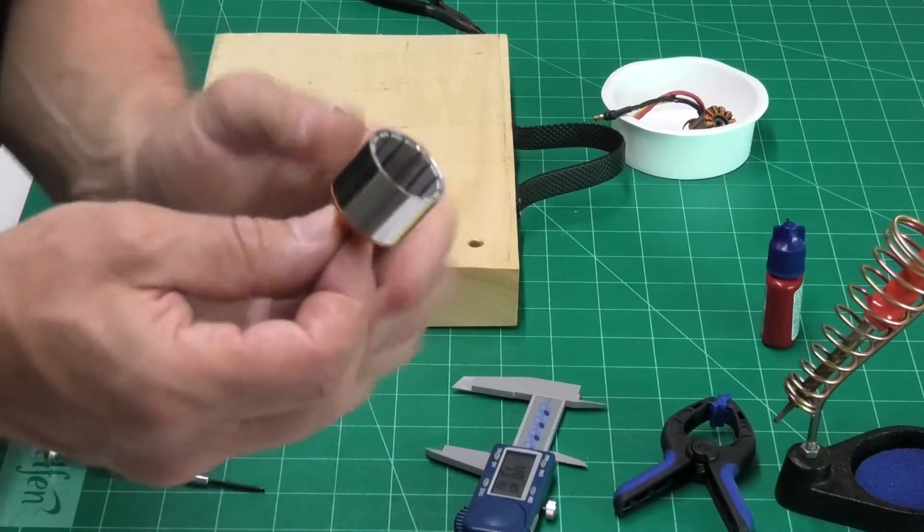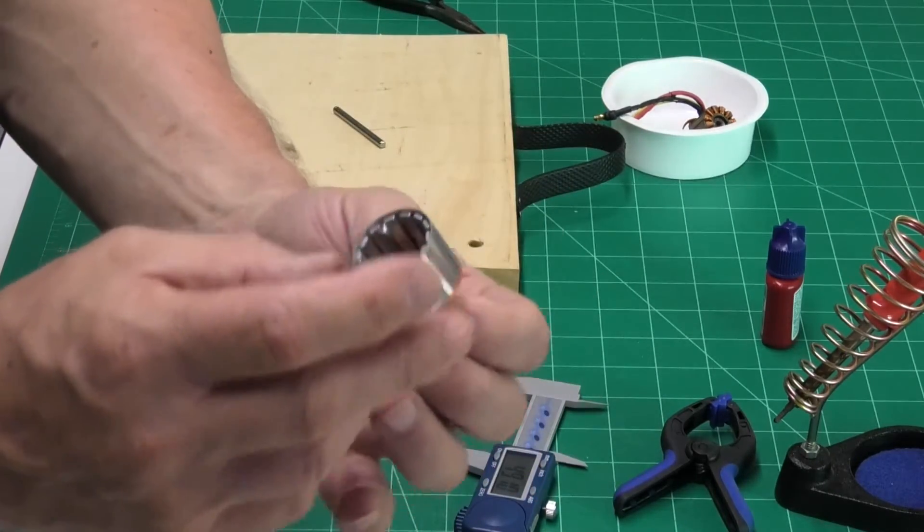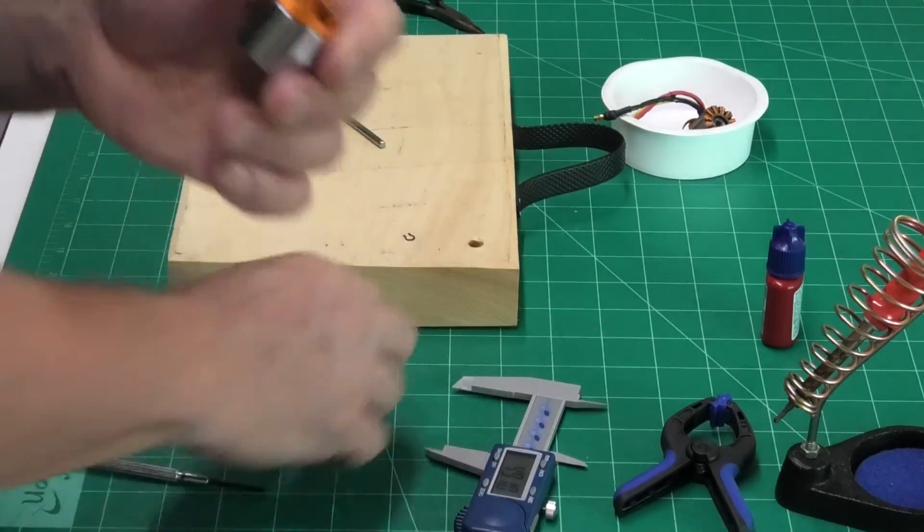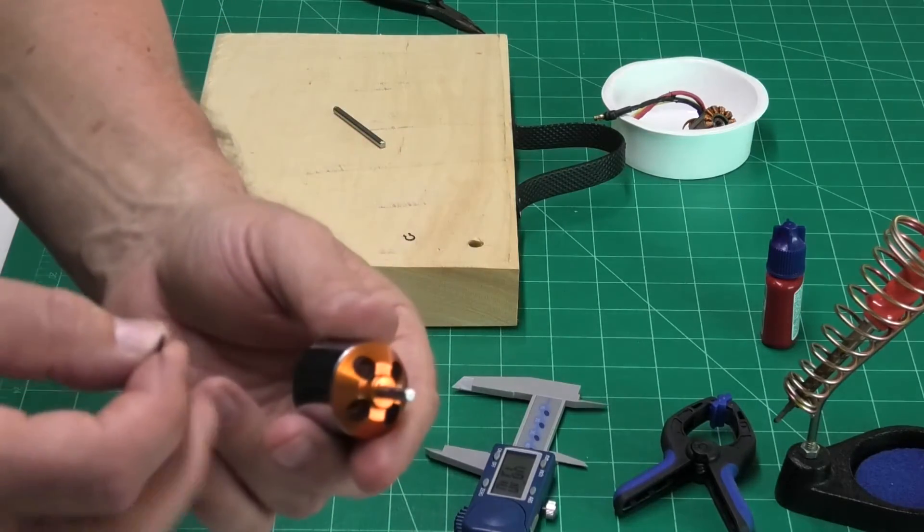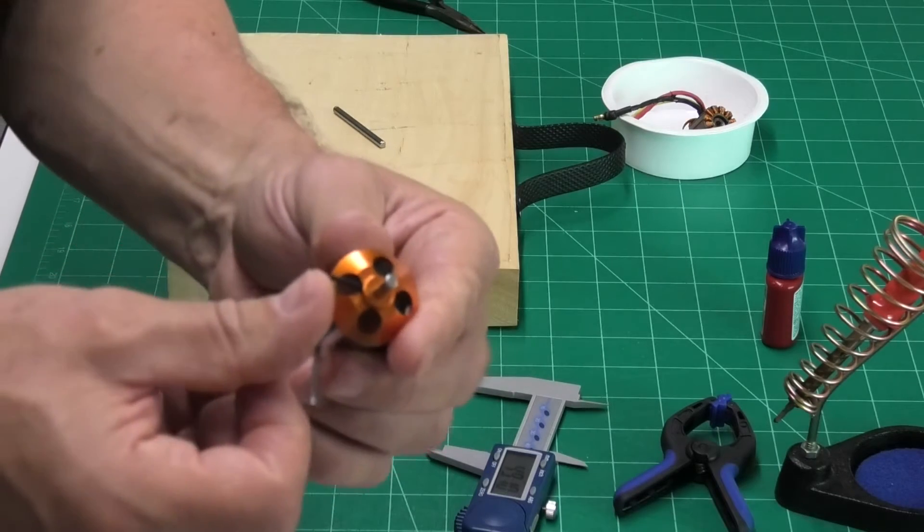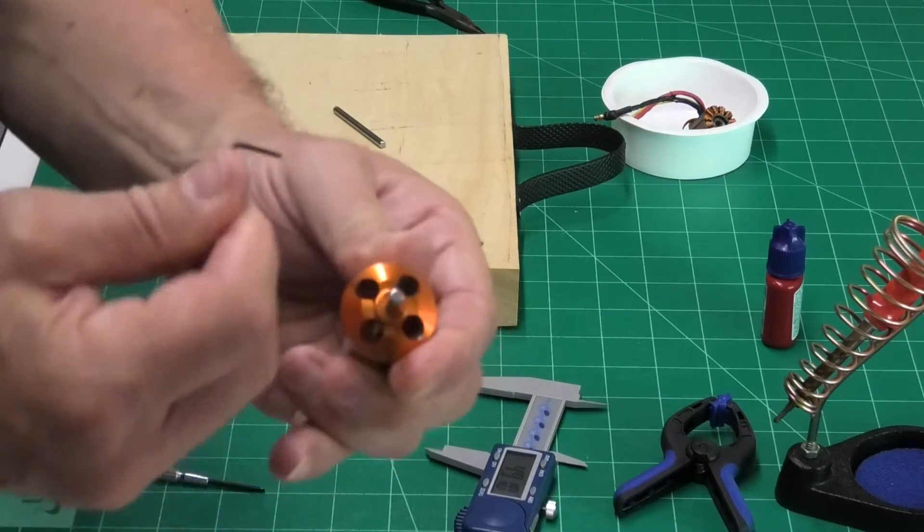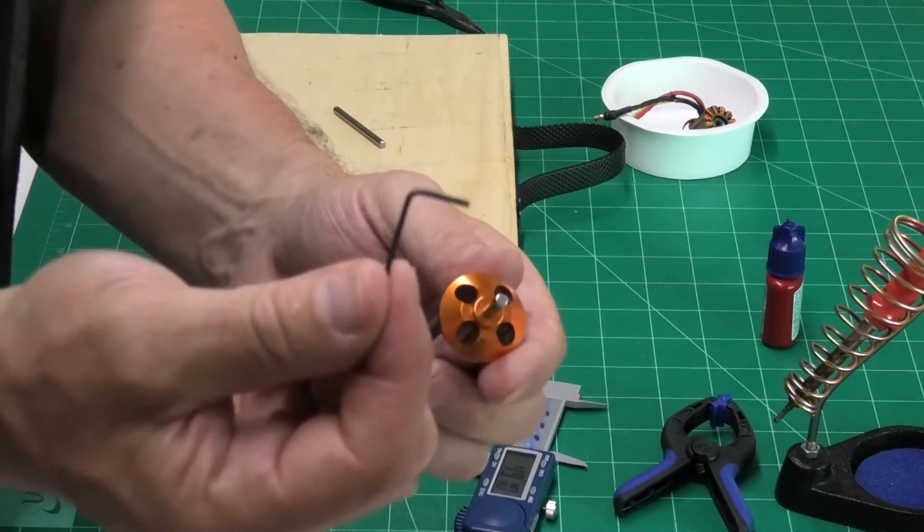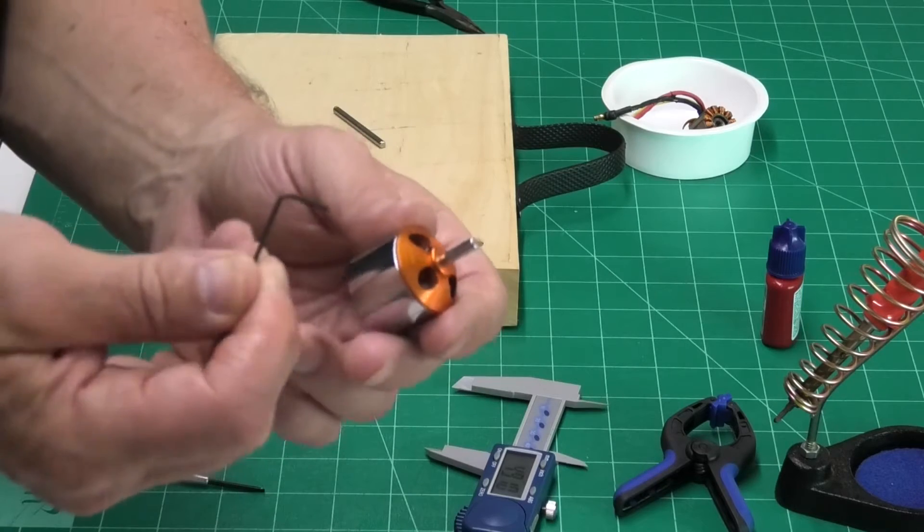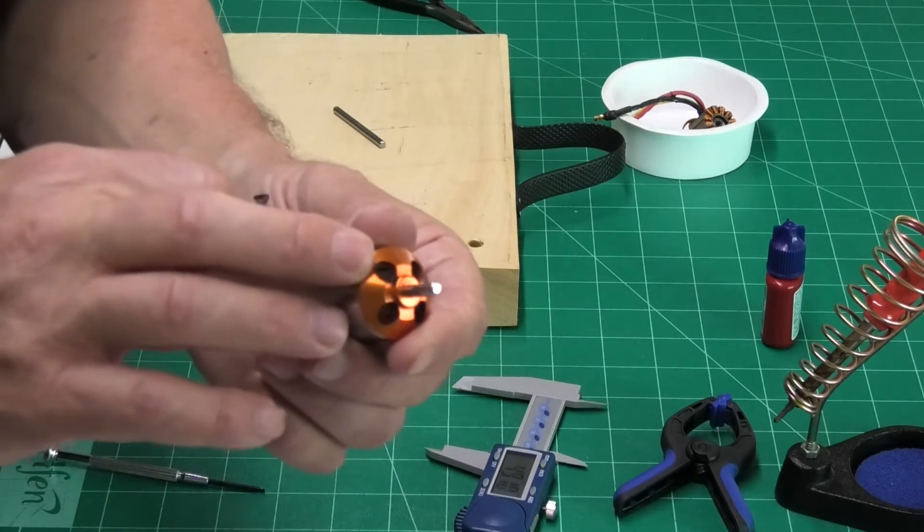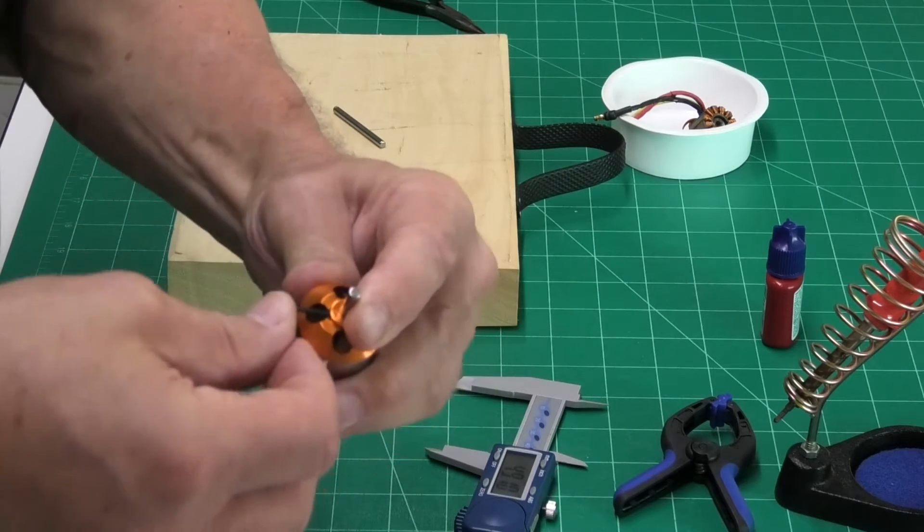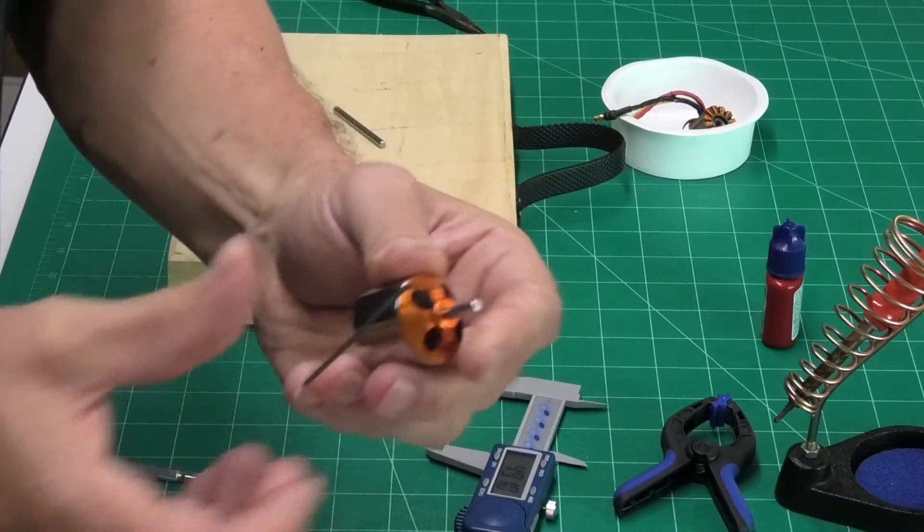So now what we need to do, we've got the outer casing with all the magnets around the outside and we need to remove the shaft. Now, the shaft on this is held in with a 1.5mm grub screw and what we need to do is make sure we have a really good quality allen key. If it's cheap, if it's soft, it's going to bend, it's going to strip inside the screw and do damage. So it needs to be a good fit. This one is a really good fit.